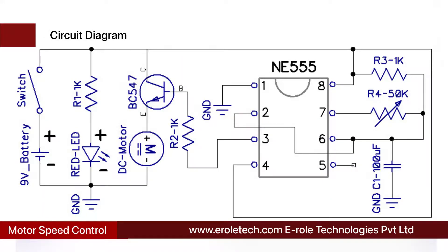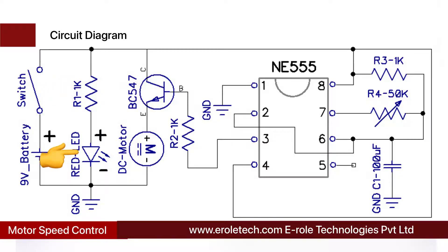Before making the project, we will understand its circuit diagram. This is a 9-volt battery to power up the circuit. This is an on/off switch which is used to start or stop the project. This is a power supply indication LED. This is a current limiting resistor to protect the LED from high current and voltage.